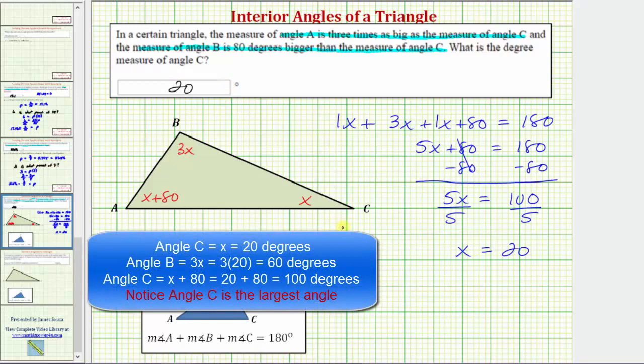It doesn't ask, but we also now know the measure of angle B is three times twenty degrees, or sixty degrees, and the measure of angle A is twenty plus eighty, which equals one hundred degrees.